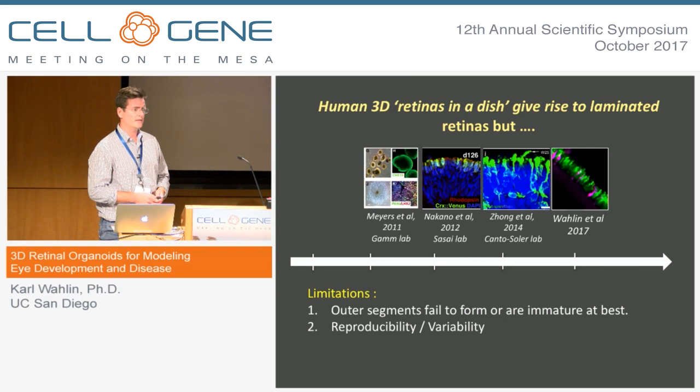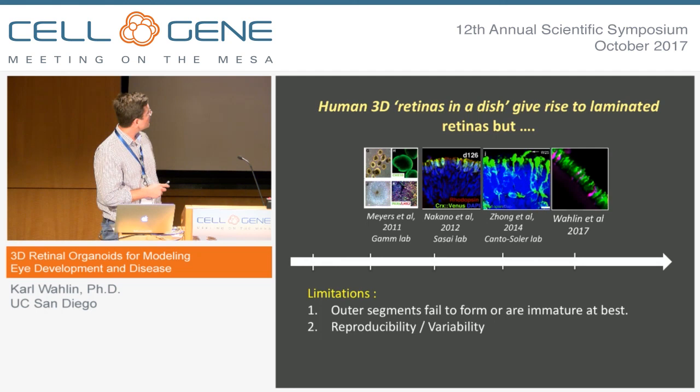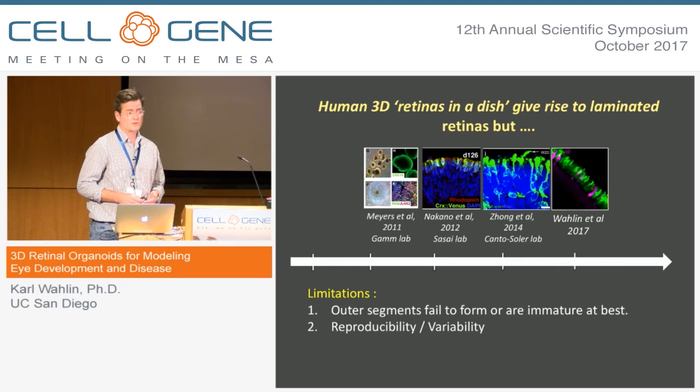The system we're talking about today has been around for about 6 years, slowly improving every year. Back in 2011, Jason Myers from David Gamm's lab showed that you can get vesicular structures with retinal cells — though they weren't very well organized. That came a little bit later from Nakano et al., who showed that photoreceptors on the outside of the structure began to laminate — a very important observation.